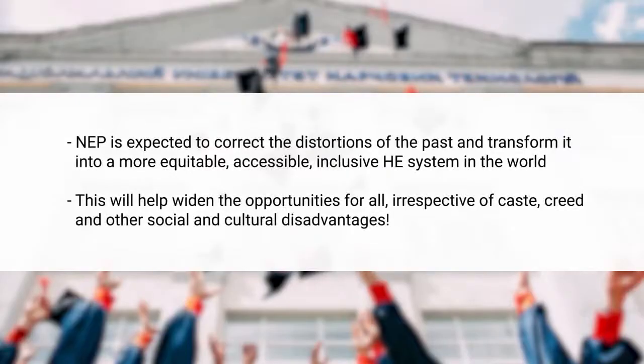Overall, if you look at the NEP 2020, it takes cognizance of the problems of the higher education system. It expects to spread and expand to a wider set of populations, and it is expected to correct the distortions of the past — of remaining elite for almost five decades in the post-independence period — and transform the higher education system into a more equitable, accessible and inclusive higher education. That will help widen opportunities for all, irrespective of caste, creed and other social and cultural disadvantages.